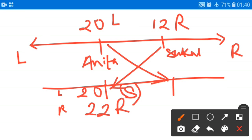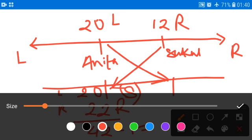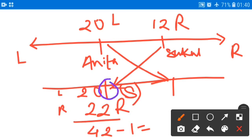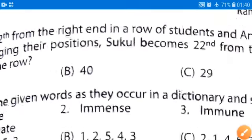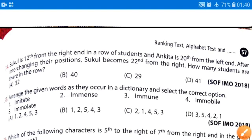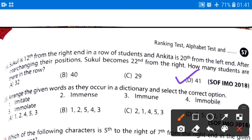We can easily find out the total number of students by adding them, that is 42, and subtracting one from them. Why? Because this is only one position and we are counting it from left and right. We are counting the same position two times. That's why we are subtracting it and we are getting answer as 41. There are total 41 students. Correct answer will be option D, that is 41 students.